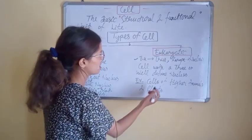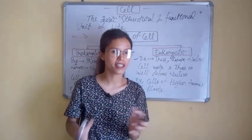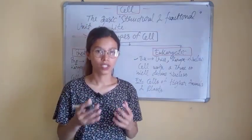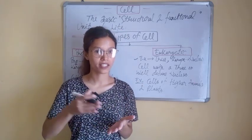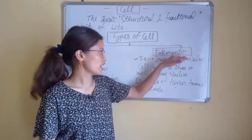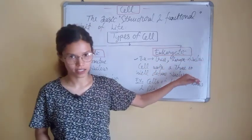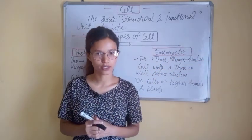Examples of eukaryotic cells are cells of higher animals and plants. We humans, and animals like cats, dogs, lions, and deer, are all eukaryotes with eukaryotic cells. I hope you understand. Thank you.